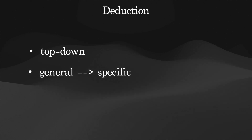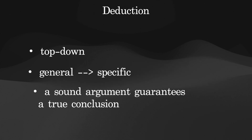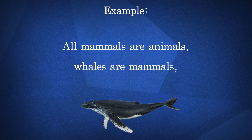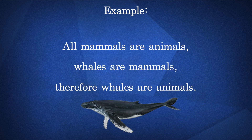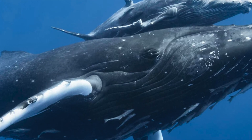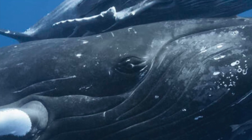Deduction is top-down reasoning. It's taking a general observation and applying it to specific cases. If the premises are true and the argument is set up in a valid way, then the conclusion has to be true. All mammals are animals; whales are mammals; therefore, whales are animals. This is an example of a syllogism, which are usually only considered syllogisms if they're deductive, but not always.